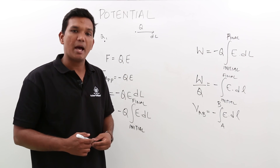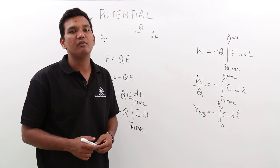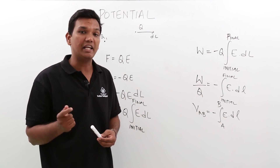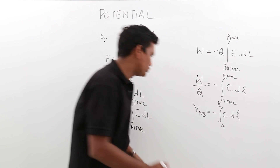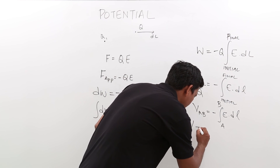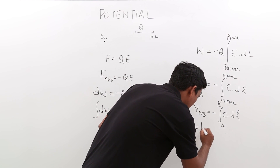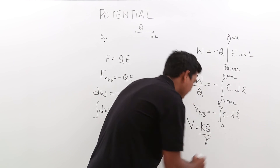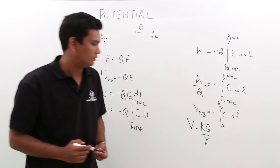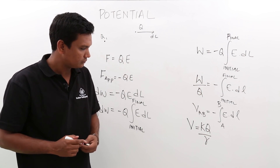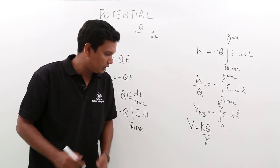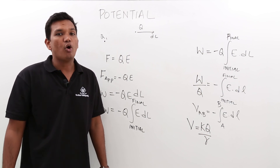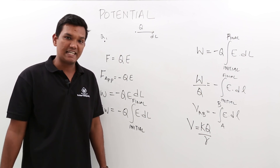There is something else called the absolute potential. When you are trying to find out the potential at any point, it is given by V equals kq over r. The absolute potential is always a scalar quantity.